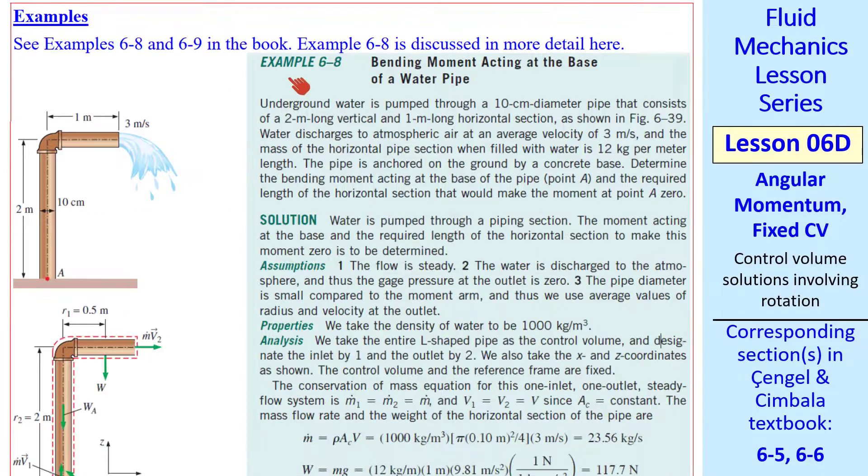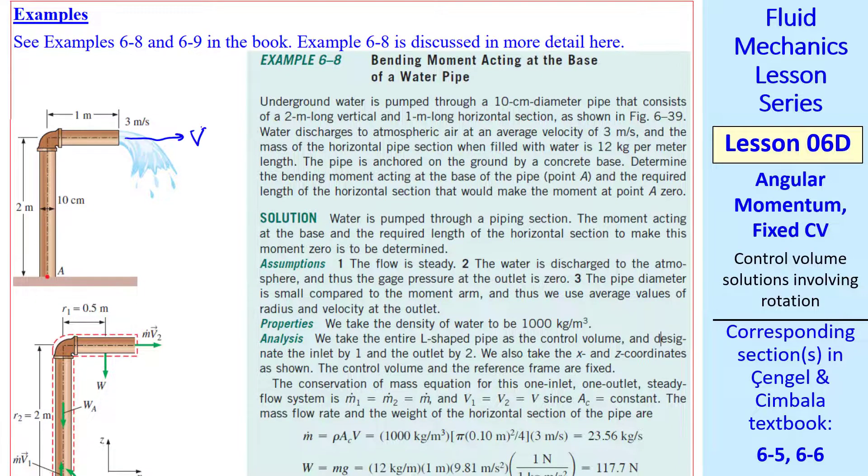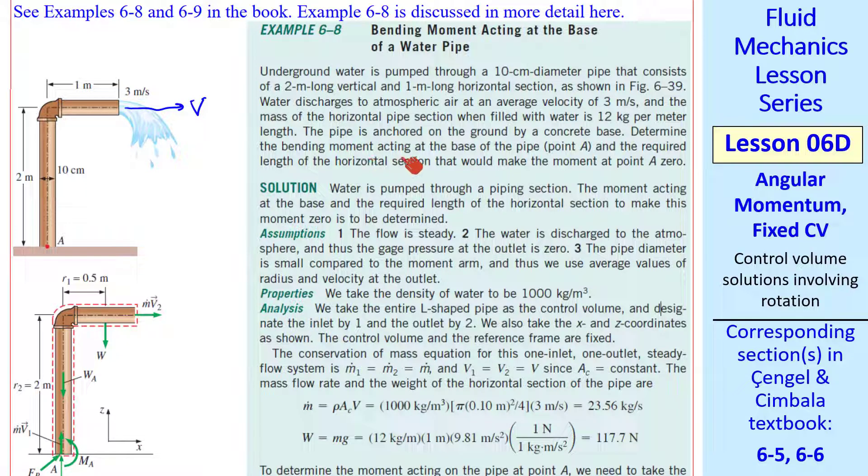Let's do one simple example. This is example 6-8 of the Cengel Cimbala textbook. We have water coming from underground through a pipe, an elbow, and an extension, and the flow comes out horizontally. We give some dimensions and weights. This pipe is anchored to this concrete base. We want to calculate the bending moment acting at the base of the pipe, which is point A.